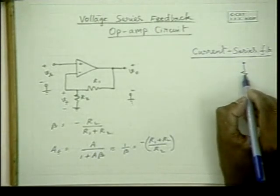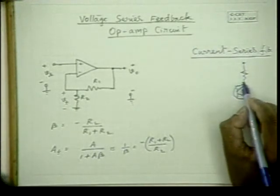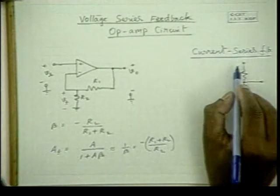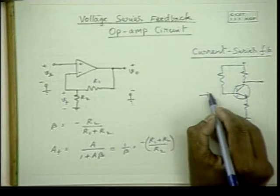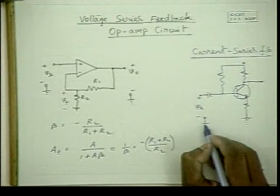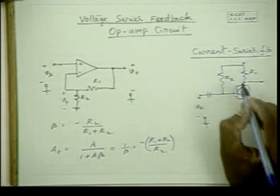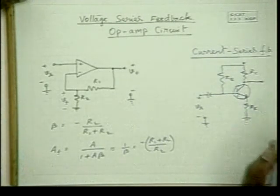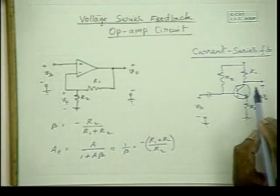This is a transistor circuit example. The output is taken here; it is a common emitter configuration. This coupling capacitor couples the input signal to the amplifier, and this is the output. This is the collector resistance, this is the biasing resistance, and this Re is a feedback resistance. Now the question is: is this voltage feedback or current feedback?